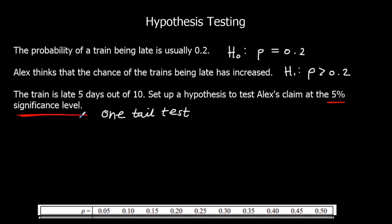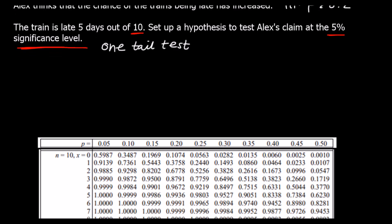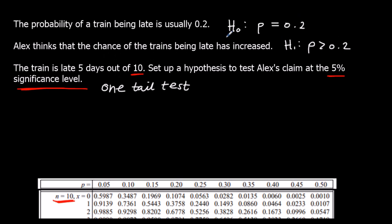If our test result falls within the critical region then we can accept the alternative hypothesis; if it doesn't, we accept the null hypothesis. In our test we have 10 pieces of data — 10 days — so n is 10. We need to find the table where n is 10 in the formula book. The null hypothesis is 0.2, so we're looking at the 0.2 column.